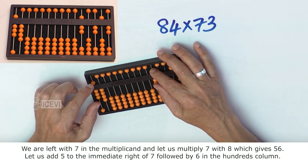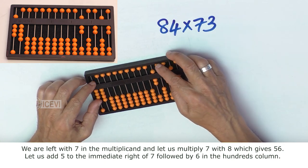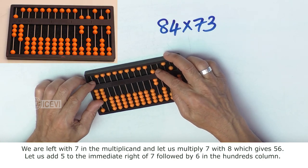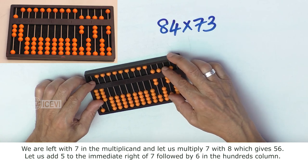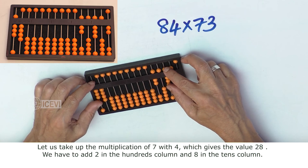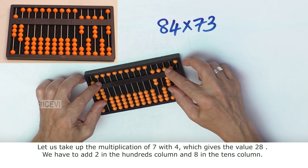We are left with 7 in the multiplicand. Let us multiply 7 with 8 which gives 56. Let us add 5 to the immediate right of 7 followed by 6 in the 100th column. Let us take up the multiplication of 7 with 4 which gives 28.